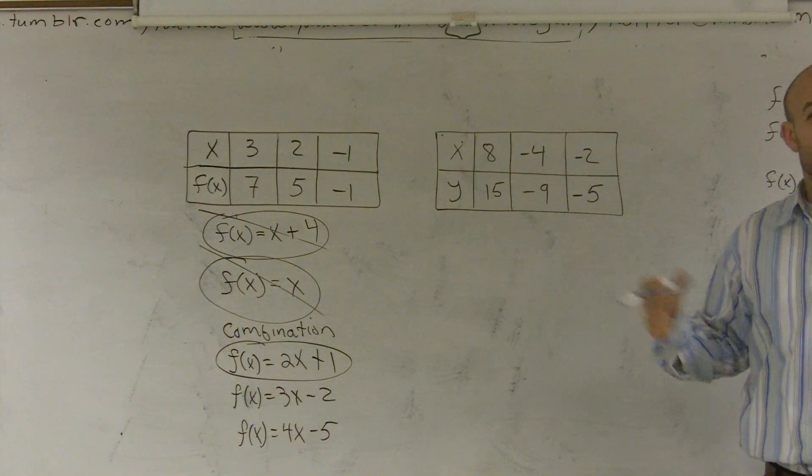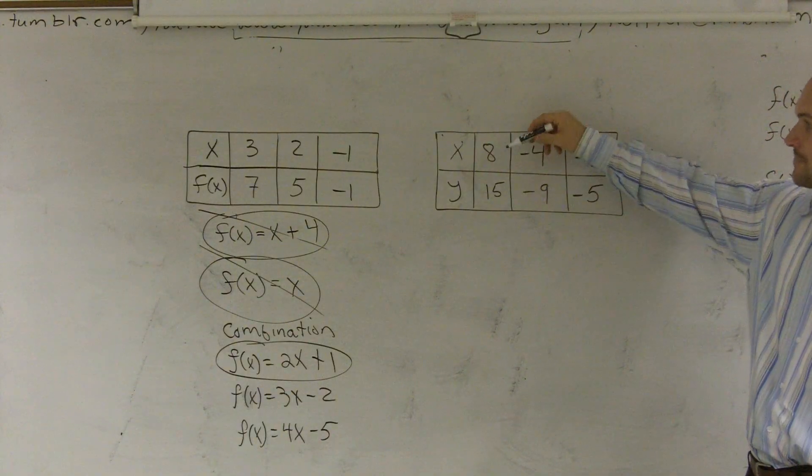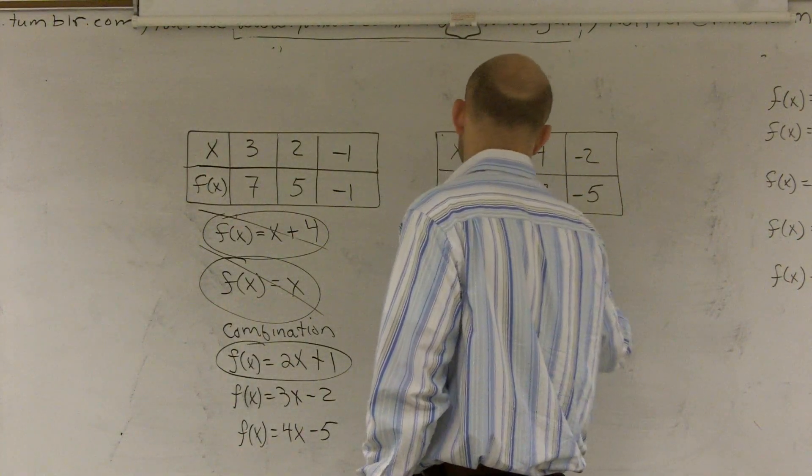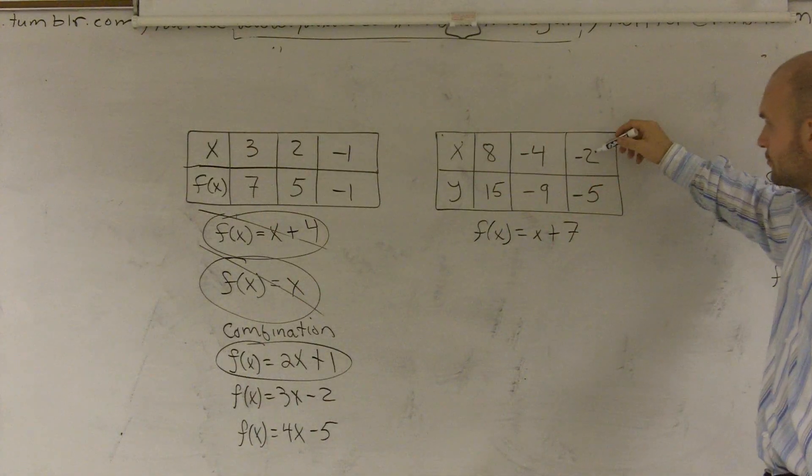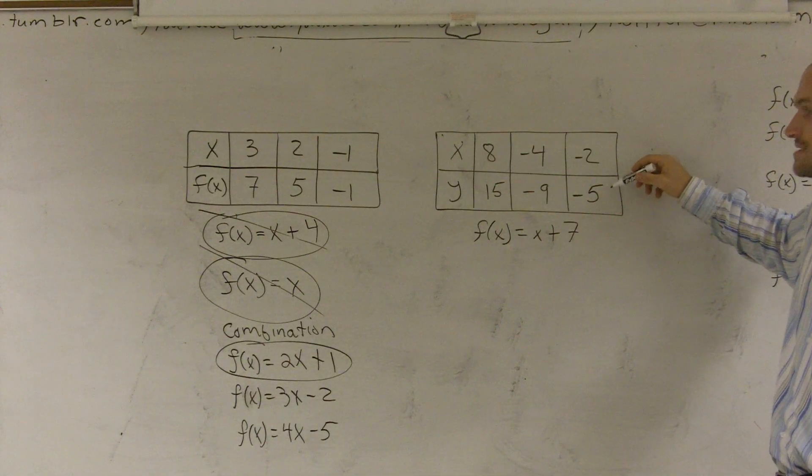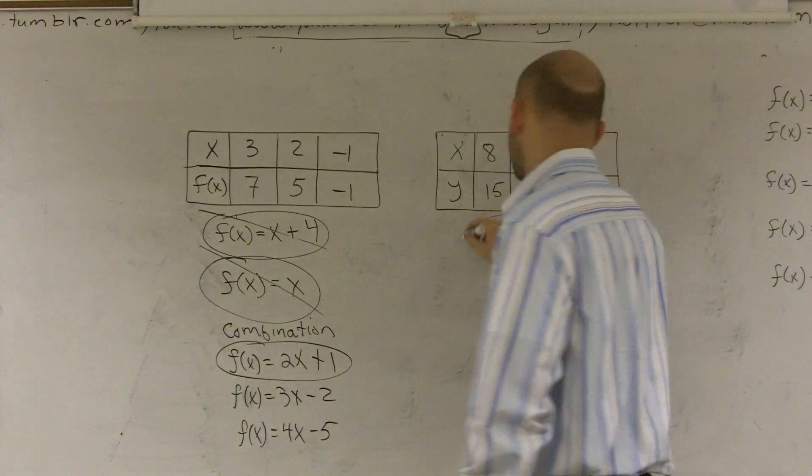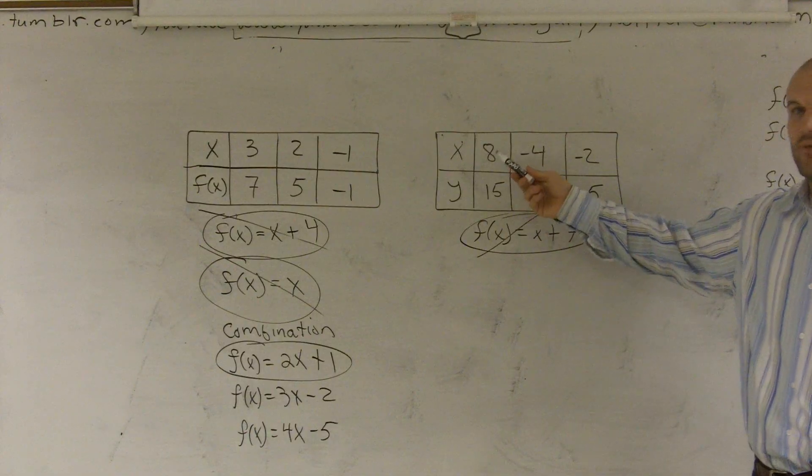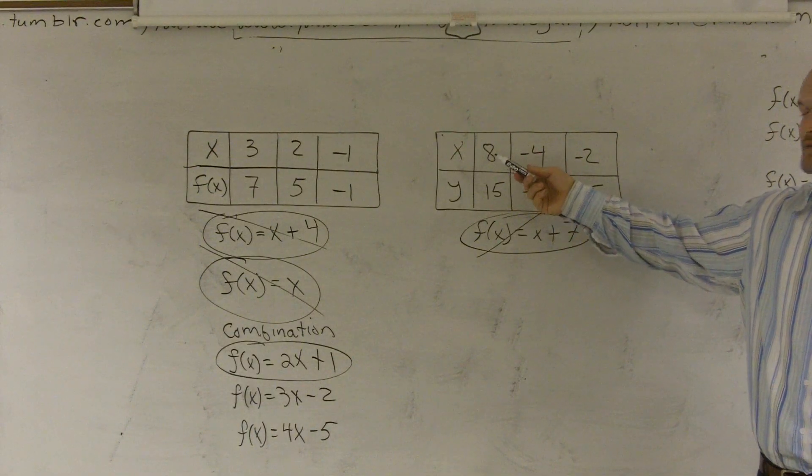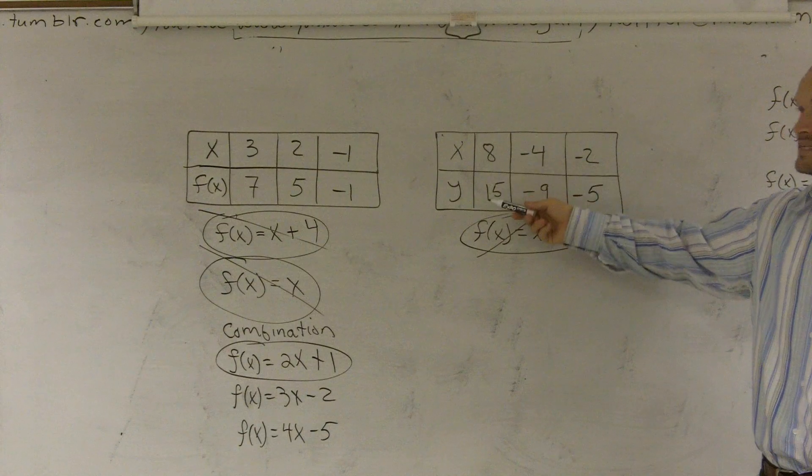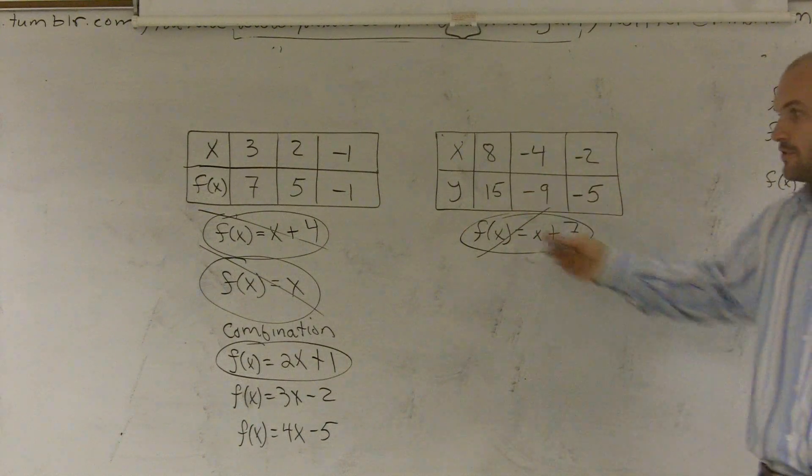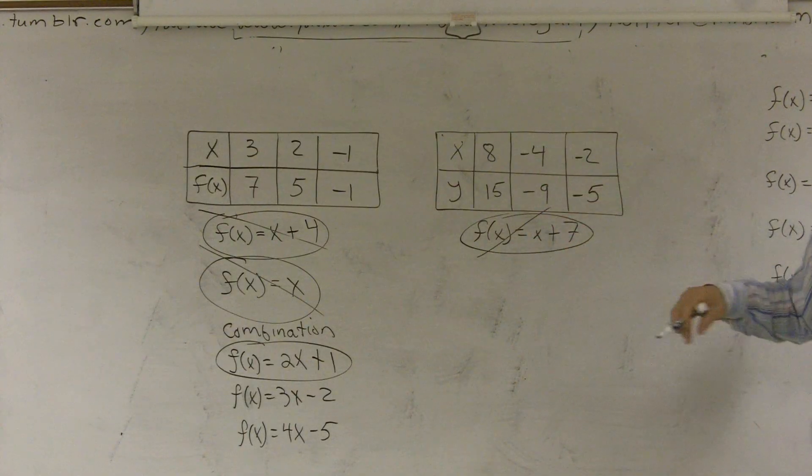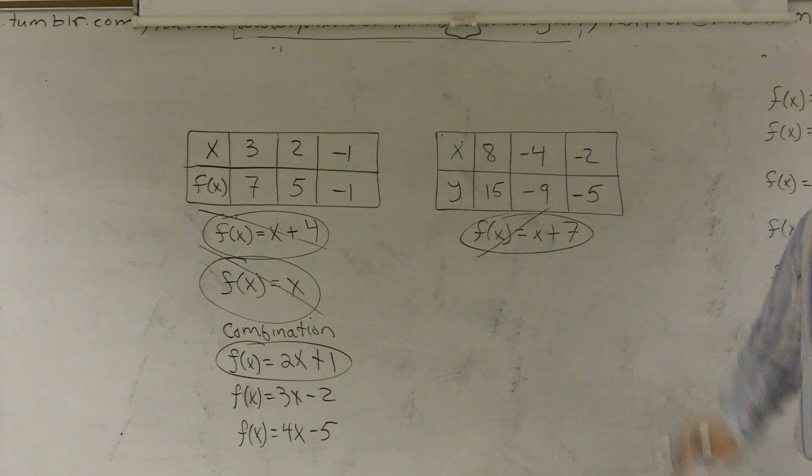So this one is a very simple one again. Again, we look at it. Here, I'd have to add 7. So I can say f of x equals x plus 7. However, negative 2 plus 7 is a positive 5, not a negative 5. So this doesn't work. What about multiplication? There's no integer that I can multiply 8 by to get to 16, nor for the rest of these. So therefore, there's no multiplication I can do or division. So I'm going to have to do a combination again.